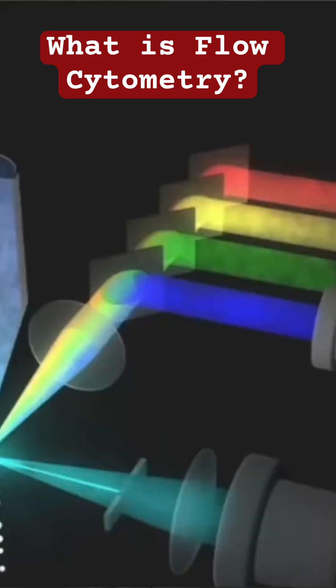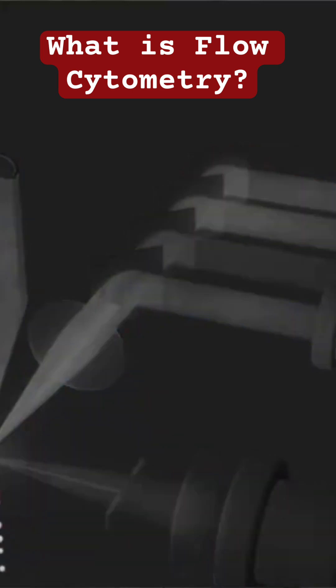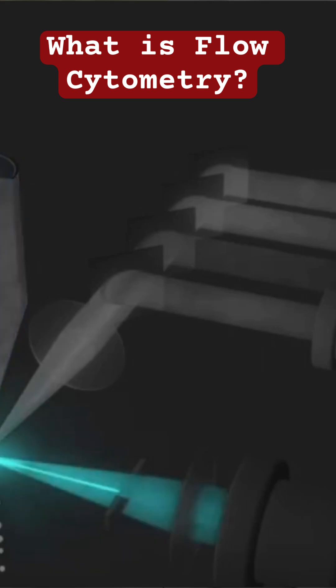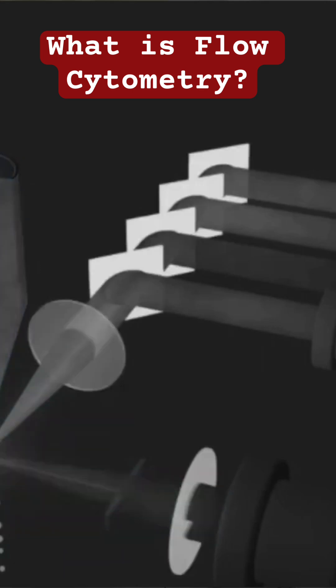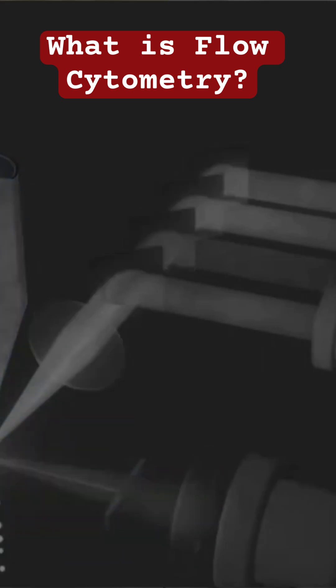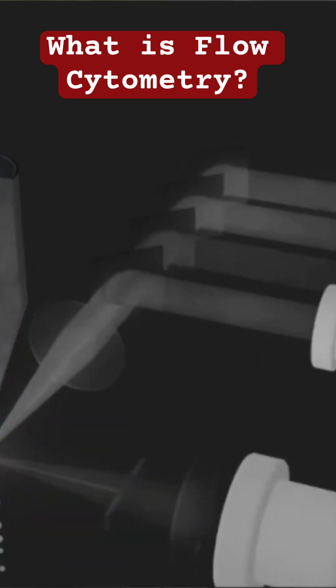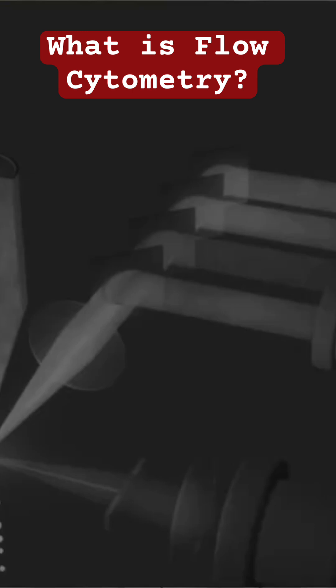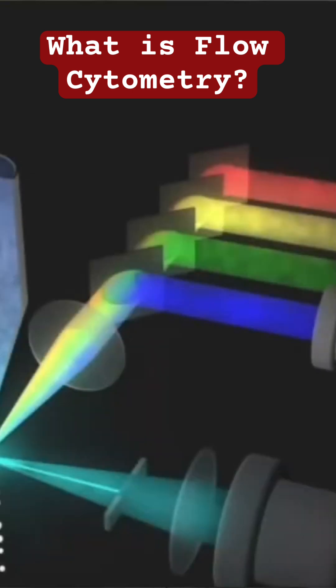Cells or particles that are suspended in a fluid can be used for flow cytometry detection. They are often stained with fluorescently labeled antibodies or dyes that bind to specific proteins or cellular components.